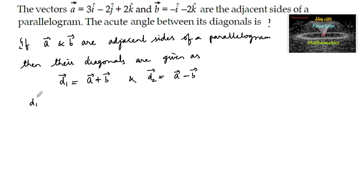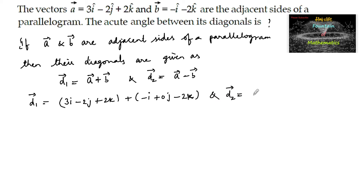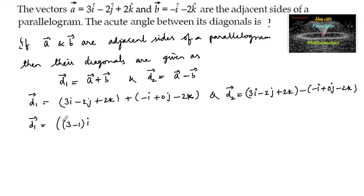So here, vector d1 is equal to vector a plus vector b, that is 3i minus 2j plus 2k plus minus i plus 0j minus 2k. And vector d2 is equal to a minus b, so we can write 3i minus 2j plus 2k minus of minus i plus 0j minus 2k. So d1 gives us 2 minus 2 of k.